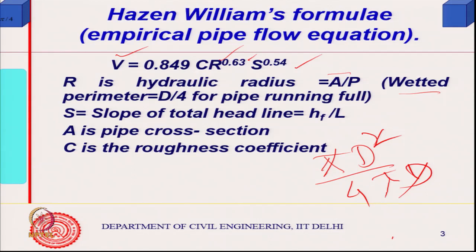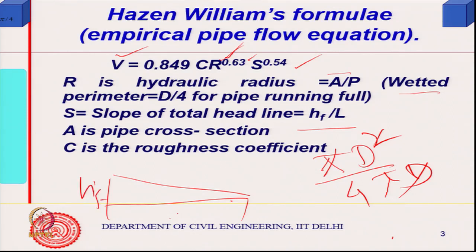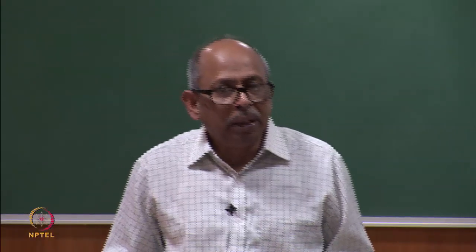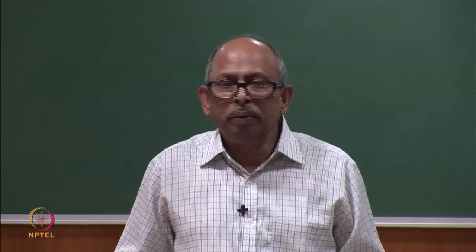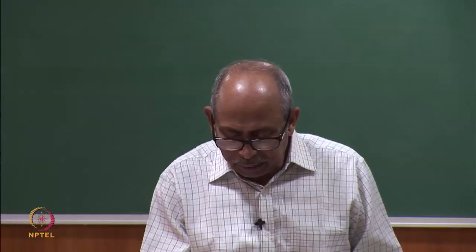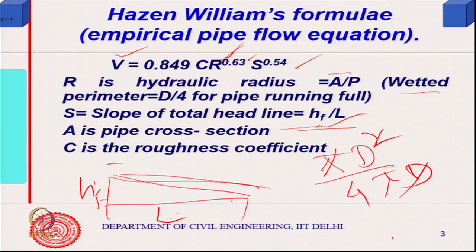This gives hydraulic radius to the power 0.63, and the slope of the head line. When there is flow in a pipe there is a head difference Hf over length L, so the slope S = Hf/L. The pressure head would vary because there are three components — gravity included. So Hf is the slope of the total head line, and C is the roughness coefficient.